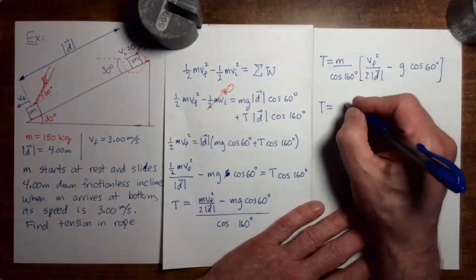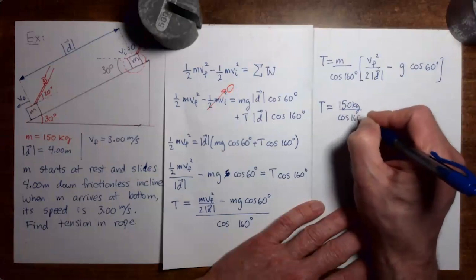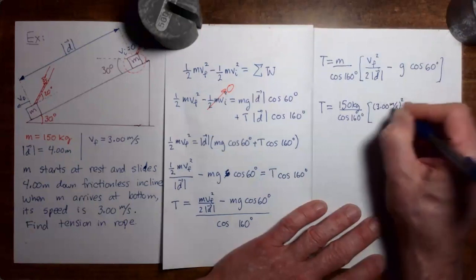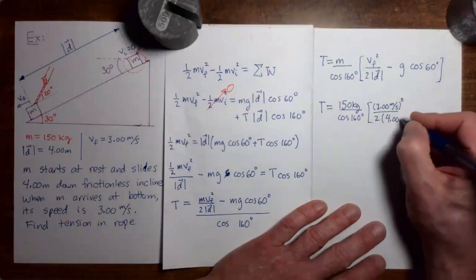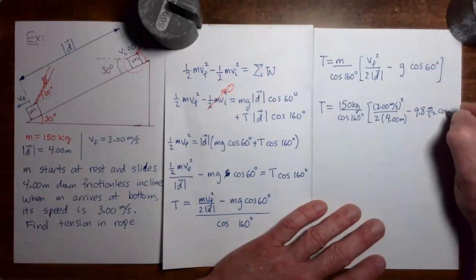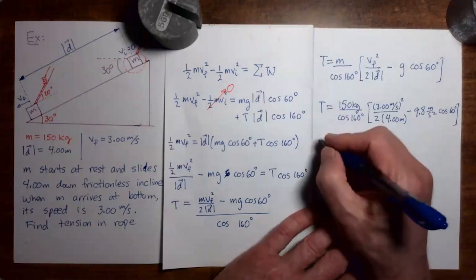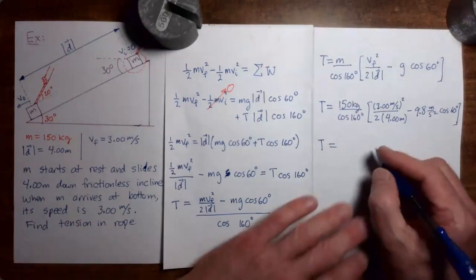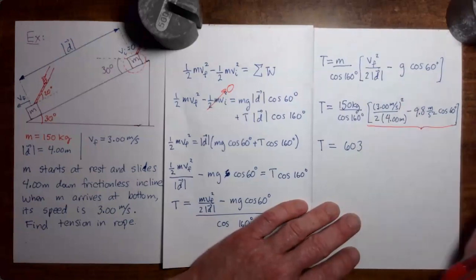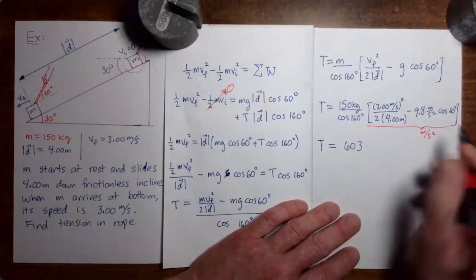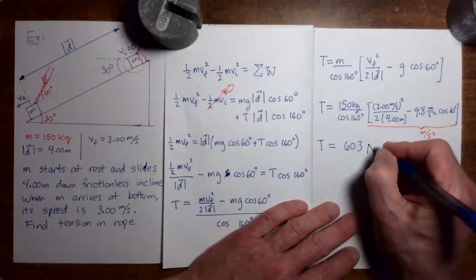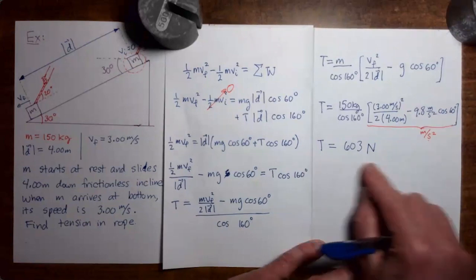Substituting numerical values: mass is 150 kilograms, v-final is 3 meters per second (squared), divided by two times 4 meters, minus g = 9.8 meters per second squared times cosine 60. Both terms inside the bracket have units of meters per second squared, so multiplying by kilograms gives newtons — the expected unit for a force. The calculation yields tension equals 603 newtons. We have now completed the second example problem using the work-kinetic energy theorem.